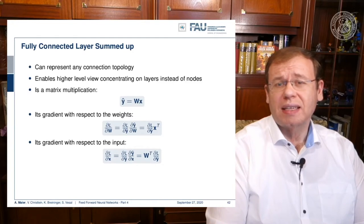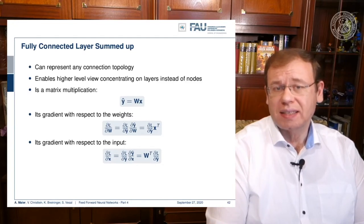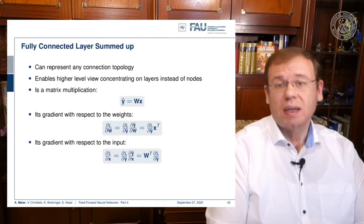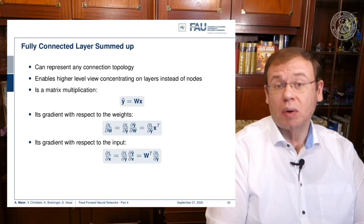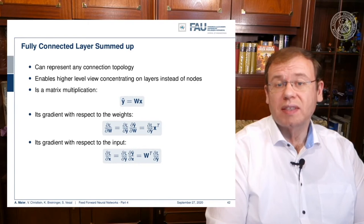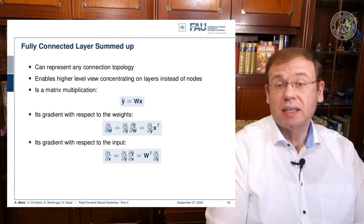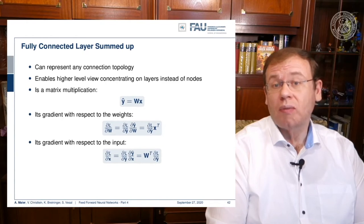We have the layer y-hat equals W times x, so there is a matrix multiplication in the forward path. The derivative of y-hat with respect to W is simply x-transpose. So if we have the loss vector coming into our module, the update to our weights is that loss vector multiplied with x-transpose — essentially an outer product of a column vector and a row vector — which always results in a matrix.